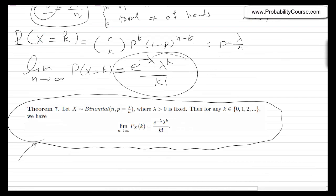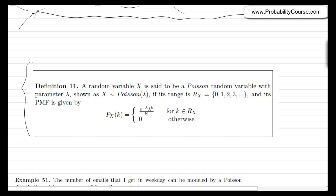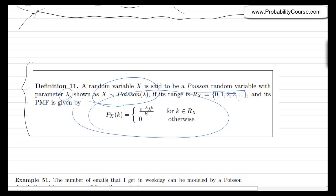We state this as a theorem: if x is a binomial random variable with parameters n and p = lambda/n, where lambda is a fixed value, then for any k, the limit of P(x = k) as n → ∞ is given by the Poisson formula e^(−lambda) · lambda^k / k!. A random variable x is said to be Poisson with parameter lambda if its range is 0, 1, 2, 3, … and its PMF is this formula.